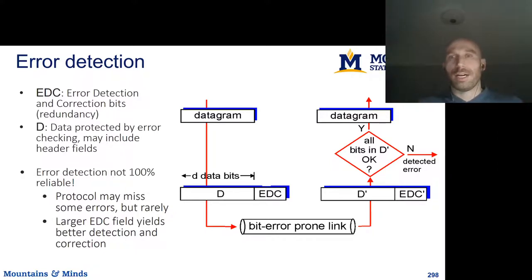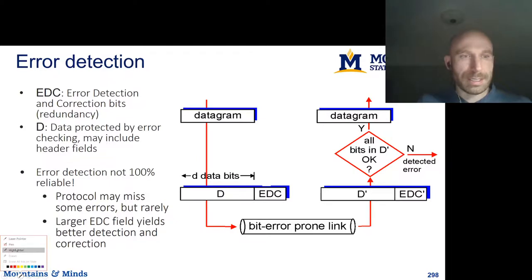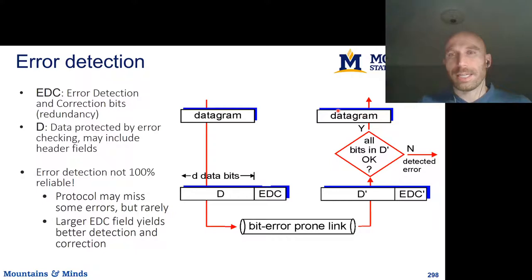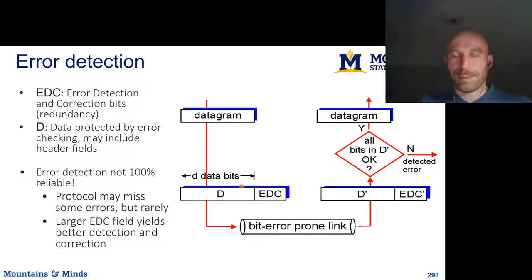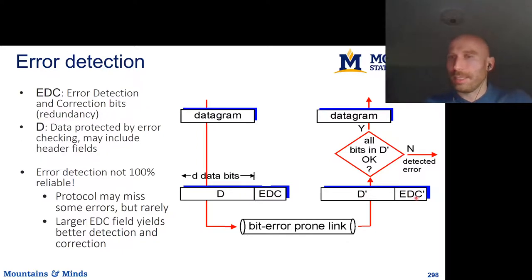The general model for error detection is: we have some data we want to send and deliver to the next hub. We start with a datagram containing D data bits. We add error detection and correction bits — EDC bits — that somehow protect or encode this data. We then transmit this whole frame over an error-prone link and receive D-prime and EDC-prime, possibly with bits flipped in transmission.